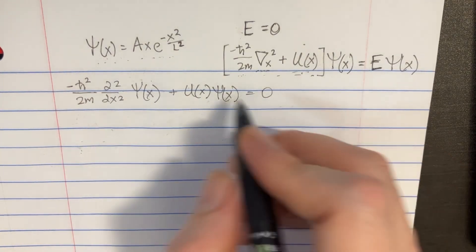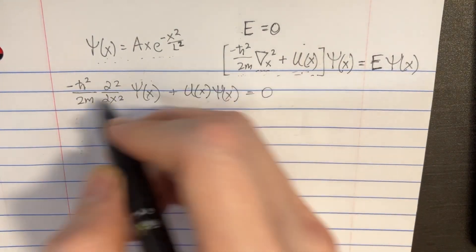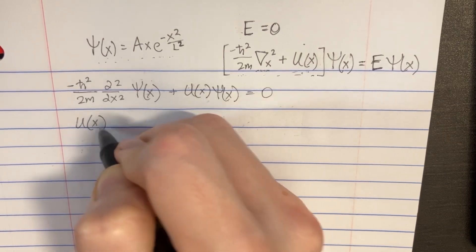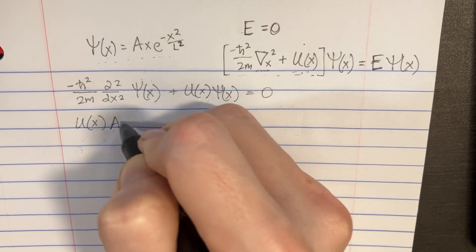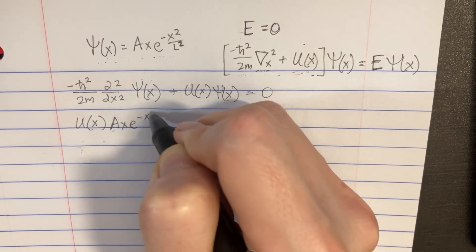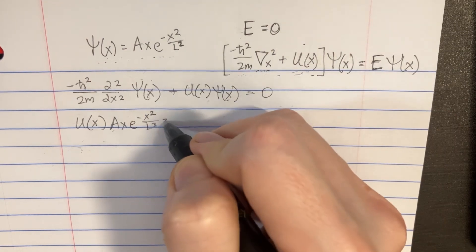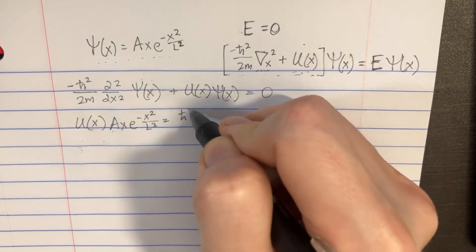Naturally, we can put this stuff on the other side, and then we'll plug in these numbers over here, so we'll say that u(x), and then we have the A e to the negative x squared over l squared is going to be equal to the positive version of this.